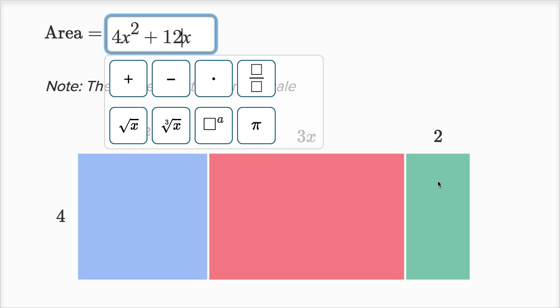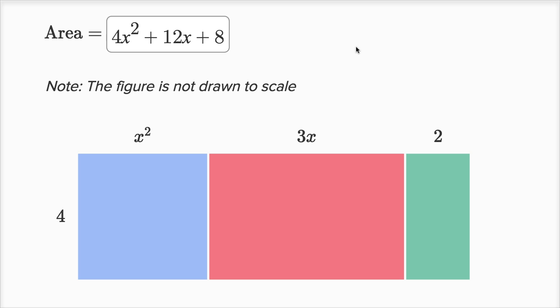And then finally, the area of this green rectangle, we actually can figure out exactly. We don't even have to express it in terms of a variable. Its height is four, its width is two, so the area's gonna be four times two, or eight. And we are done.